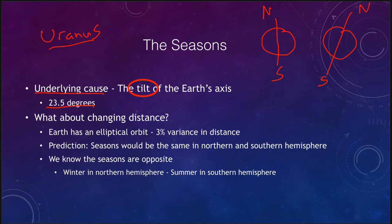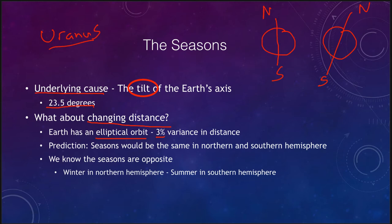What about the changing distance? A common misconception is that the seasons are caused by the changing distance between the earth and the sun. The earth does have an elliptical orbit, meaning it is sometimes closer and sometimes further away from the sun. However, this is only about a three percent variation — much less than what would be needed to explain the seasons. So while the distance does vary, it is not the reason the seasons occur.